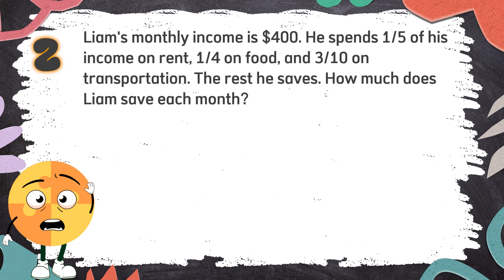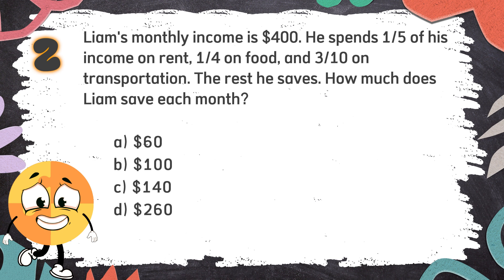Number 2: Liam's monthly income is $4,100. He spends one-fifth of his income on rent, one-quarter on food, and three-tenths on transportation. The rest he saves. How much does Liam save each month? Again, Liam's monthly income is $4,100. He spends one-fifth on rent, one-quarter on food, and three-tenths on transportation. The rest he saves. How much does Liam save each month? The choices are: A. $60, B. $100, C. $140, D. $160.